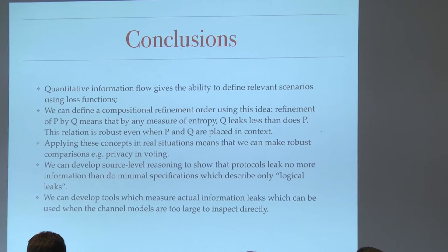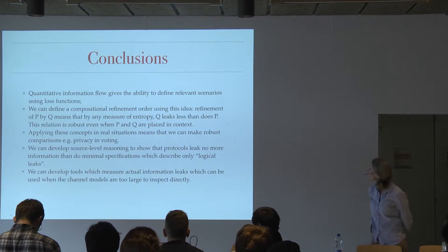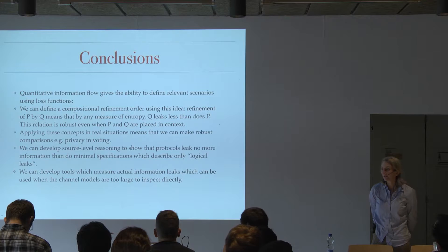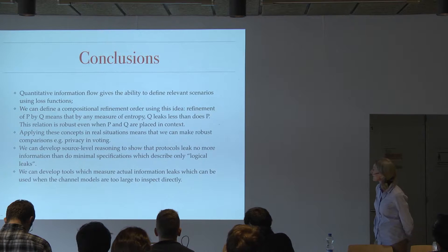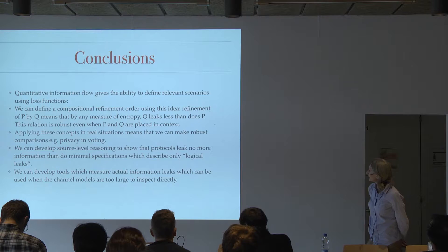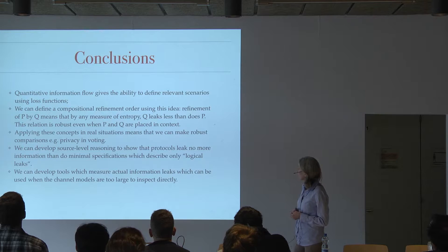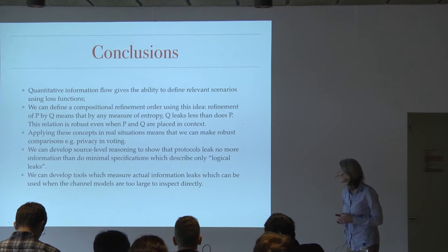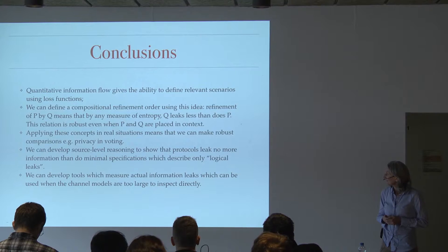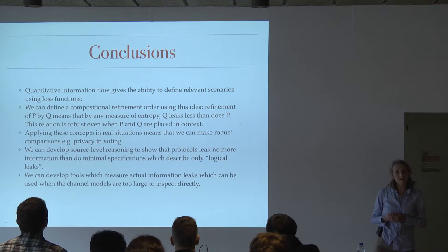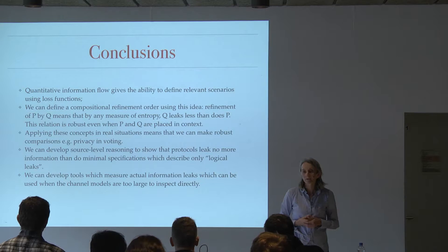In conclusion: quantitative information flow gives the ability to define relevant scenarios. We can define a refinement relation so we can really say that one program leaks less than another program. By applying these concepts in real situations we can actually measure how much information is leaking — for example, in voting protocols. And finally, we can develop source-level reasoning to show that protocols leak no more information than some specification, and develop tools which can actually measure information leaks and relate them exactly to particular scenarios modeled using this framework.